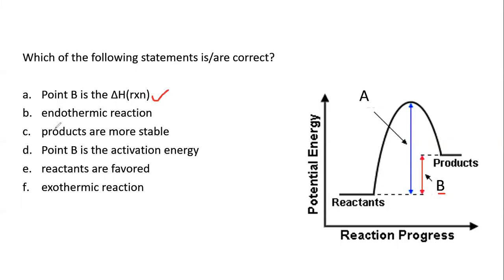Statements B and F say endothermic and exothermic reaction respectively — it can't be both. The characteristic of an endothermic reaction on an energy diagram is that the products are higher in energy than the reactants. For an exothermic reaction, the products are lower in energy. Here we see the products are higher in energy than the reactants, so this is an endothermic reaction — not exothermic.